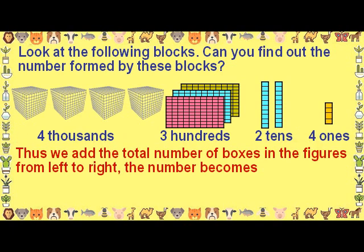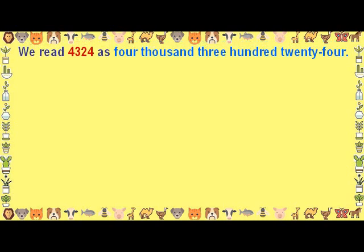Thus, we add the total number of boxes in the figures from left to right. The number becomes 4000 plus 300 plus 20 plus 4. We read 4324 as four thousand three hundred twenty-four.